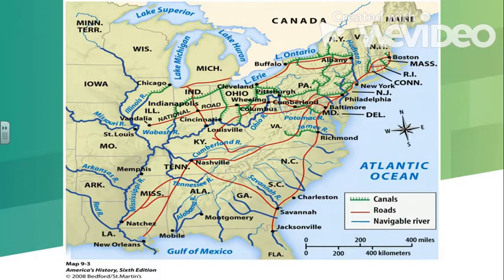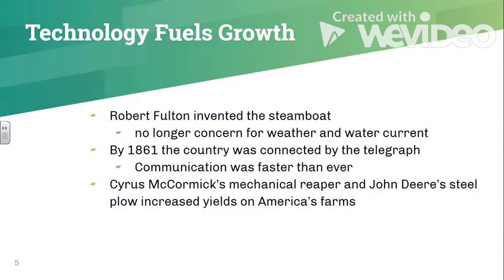Sticking with the communication and connectedness the United States is going through, most of the growth is happening through technological advancements. The steamboat was really important because weather and water current are no longer a concern — the steamboat could go upstream relatively fast. Although at the beginning of its invention the steamboat led to quite a few explosions, as the technology improved, rivers were being used up and down in large numbers for trade.